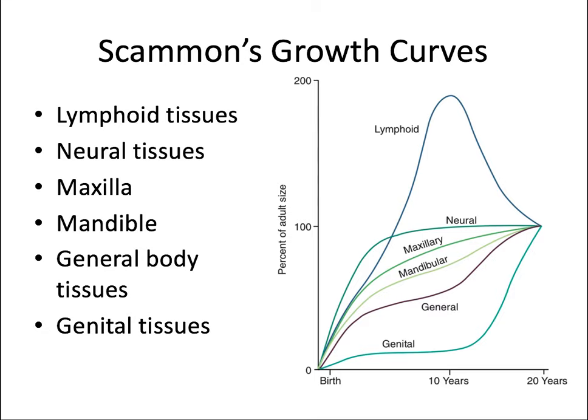One visual depiction of a typical growth pattern is Scammon's growth curves. These show age on the x-axis in years and tissue size on the y-axis. From top to bottom we have the lymphoid growth curve — immune tissues — then the neural growth curve (the brain), then maxilla and mandible, general body tissues like bones and muscles, and finally genital tissues. Neural tissues, including the brain, grow rapidly after birth — the steepest of these curves — and reach near adult size by about age six or seven, then level out.